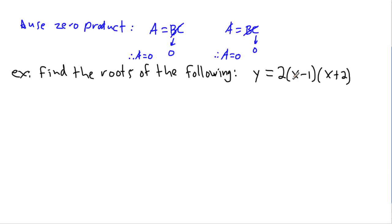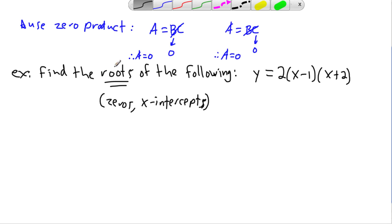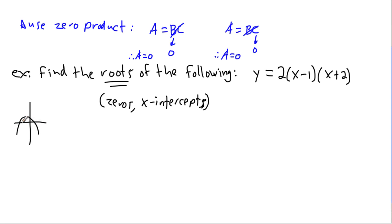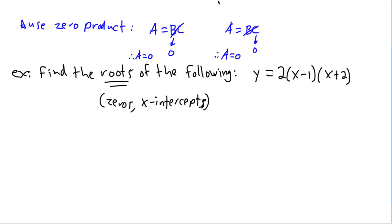We're going to use that idea to find the roots. Remember, finding a root means finding the zeros — some people call them the x-intercepts. Roots, zeros, and x-intercepts all mean the same thing. The idea is that we have some graph and we're trying to find the x values where it crosses the x-axis. By definition, we set y equal to zero to find them.